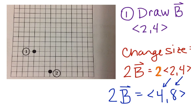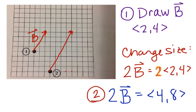So if we have that new vector 2B, I'm going to draw that. So on number 2 I'm going to start there and I'm going to go over 1, 2, 3, 4 and then up 1, 2, 3, 4, 5, 6, 7, 8. And so this one is 2B.